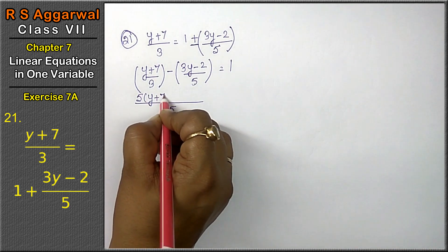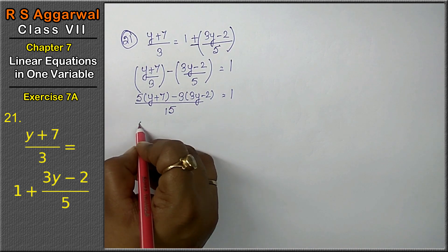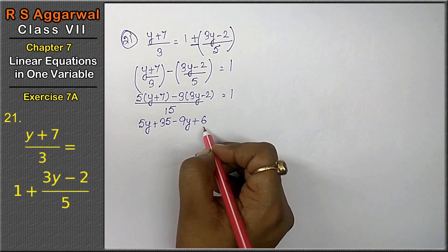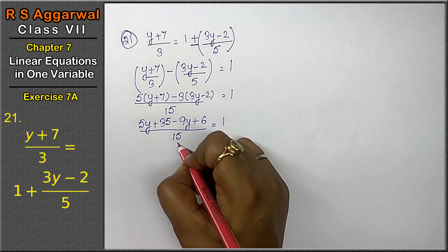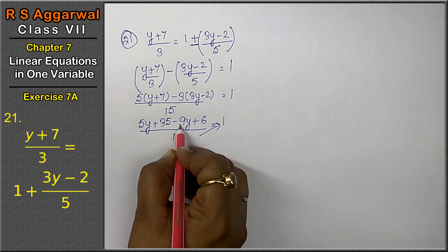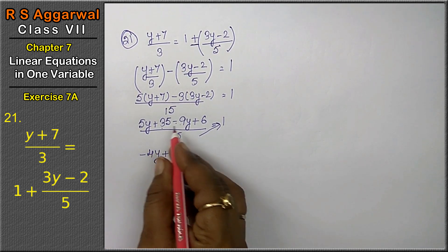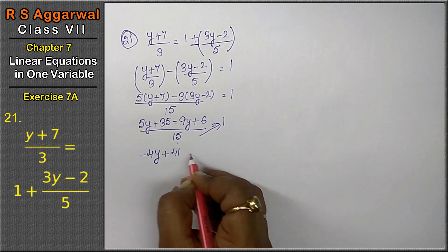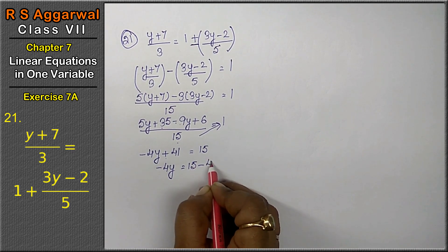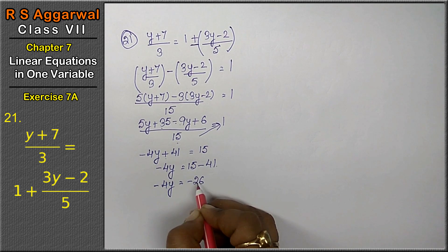So we get: 5(y plus 7) minus 3(3y minus 2) equals 1, upon 15. Expanding: 5y plus 35, minus 9y, and minus minus gives plus 6, upon 15 equals 1. Combining: 5y minus 9y gives minus 4y (opposite signs, subtract), and 35 plus 6 gives 41. So minus 4y plus 41 equals 15, giving minus 4y equals minus 26.